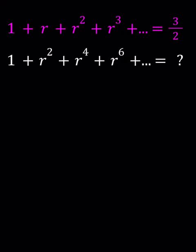From the first one, if we use the formula, 1 over 1 minus r equals 3 halves, and we can flip both sides at the same time. 1 minus r equals 2 thirds, which gives us r equals 1 third.